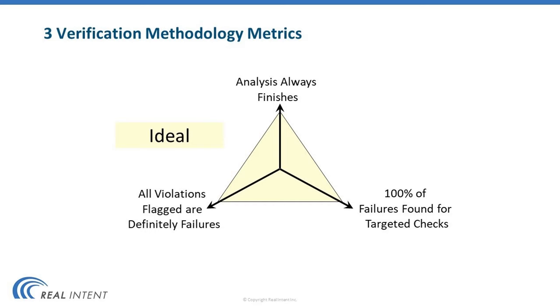Here's a very simplified model on how we can evaluate the merits of each of these approaches. The first metric says the analysis always finishes, which means that the method completes in a practical time frame. The metric on the left says that all the violations flagged by the analysis are definite design failures. And the third metric says that for the targeted checks, 100% of the failures are found — which is another way of saying that you can prove the absence of any errors in the design. So these are the three dimensions on which we can evaluate the various methodologies.